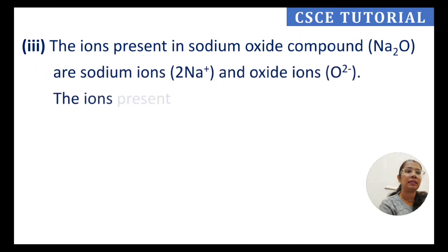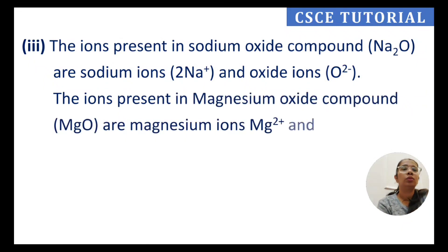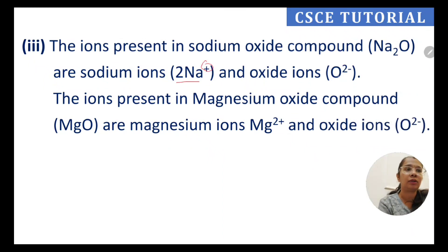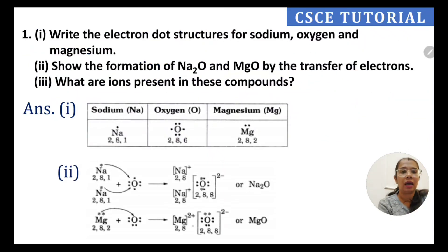Sodium has a single positive charge, so two sodium atoms are needed to balance the two negative charges of the oxygen ion. For magnesium oxide, magnesium has a 2+ charge and oxygen has a 2- charge, so one magnesium ion (Mg²⁺) and one oxide ion (O²⁻) are present in the compound.